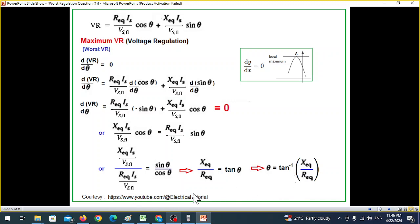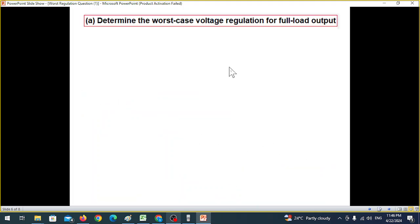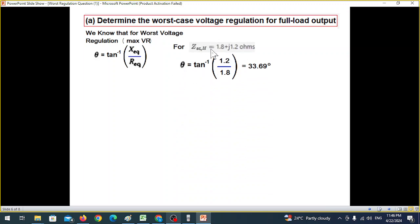So from here we can say that the angle is tangent inverse X equivalent divided by R equivalent. I have taken help from this website, very good website. I strongly recommend that you go through this. This is the condition for worst voltage regulation. The angle has to be this one. Now when you start the question, you can straight away start that we know that the worst case voltage regulation theta will be this. Then you plug in the values. X is 1.2 and R is 1.8, so we get the angle 33.69 degrees.